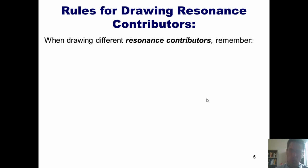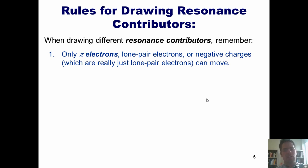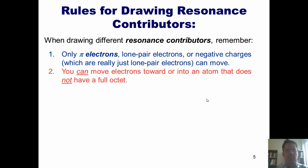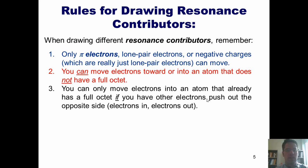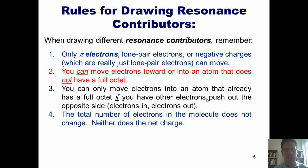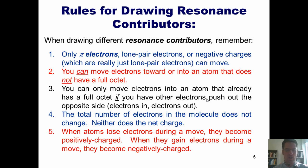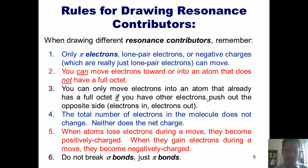Here are some rules for drawing resonance contributors. First, only pi electrons, lone pair electrons, or negative charges — which are really just lone pair electrons — can move. Second, you can move electrons toward or into an atom that does not have a full octet. Third, you can only move electrons into an atom that already has a full octet if you have other electrons push out the opposite side of that atom — I sometimes call this the 'electrons in, electrons out' rule. Fourth, the total number of electrons in the entire molecule never changes as you move from one resonance contributor to another, and neither does the net charge. Five, when atoms lose electrons during a move, they become positively charged; when they gain electrons, they become negatively charged. And lastly, we don't break sigma bonds, only pi bonds.